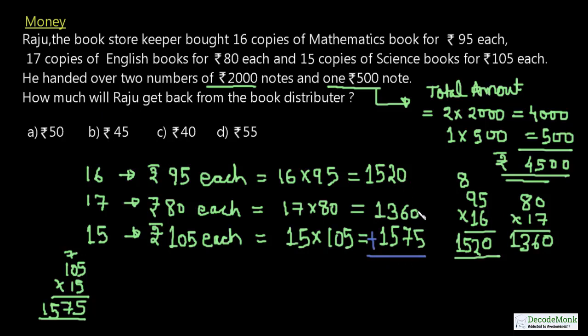Adding the total amount required: 1520 + 1360 + 1575. Working through the columns: 0+0+5 = 5, 2+6+7 = 15 carry 1, 1+5+3+5 = 14 carry 1, 1+1+1 = 3. This gives us ₹4455.